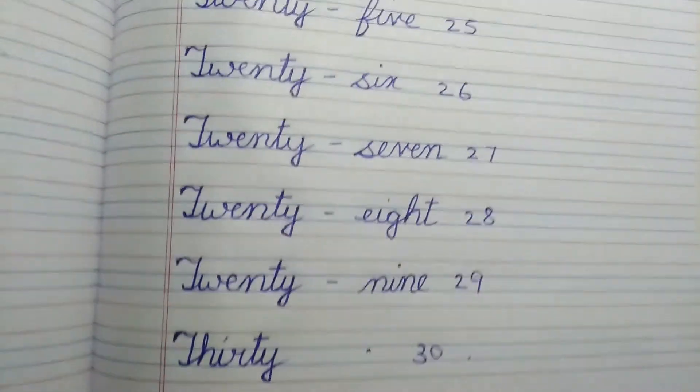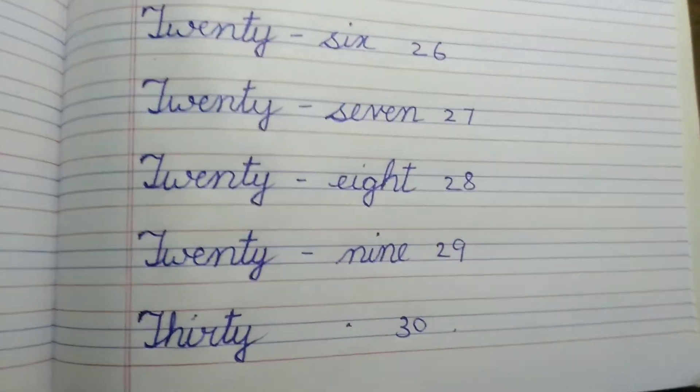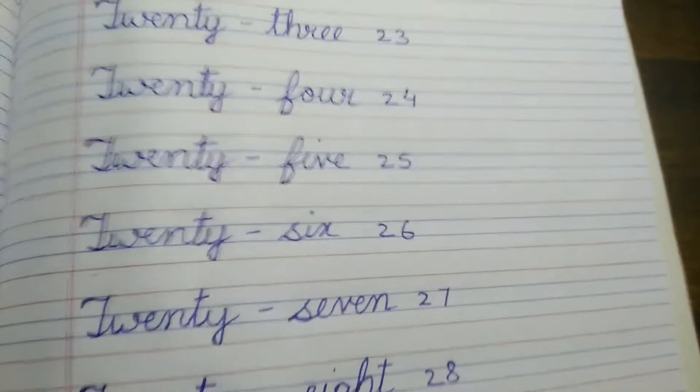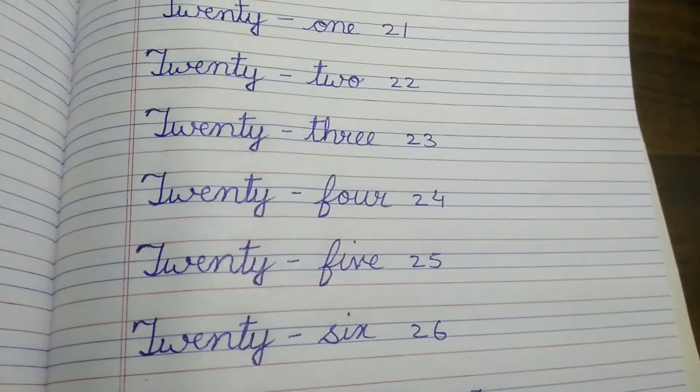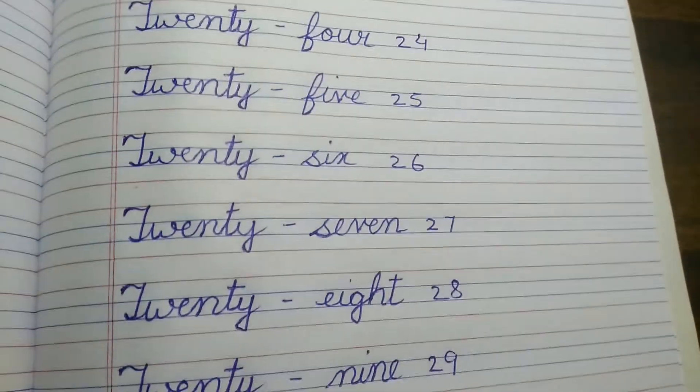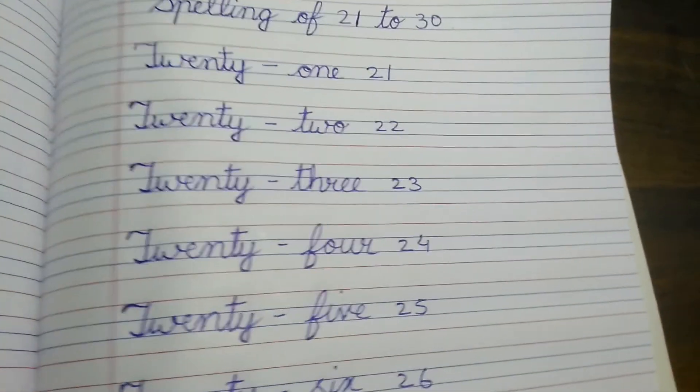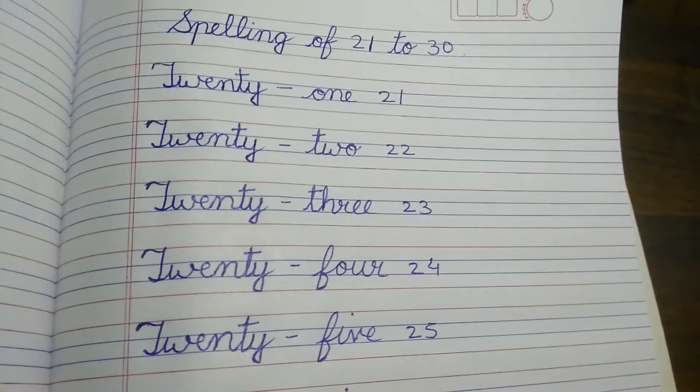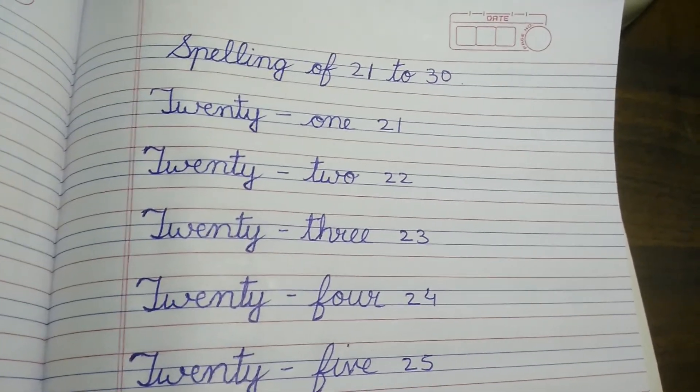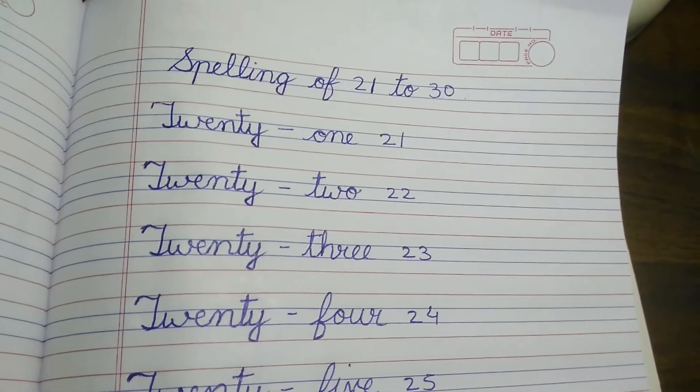Again and again repeating the spellings will make them learn the spellings properly. They will memorize the spelling very nicely and properly. Again I am repeating, I have made videos for spellings 1 to 10 and 11 to 20, and you will find them in the description.